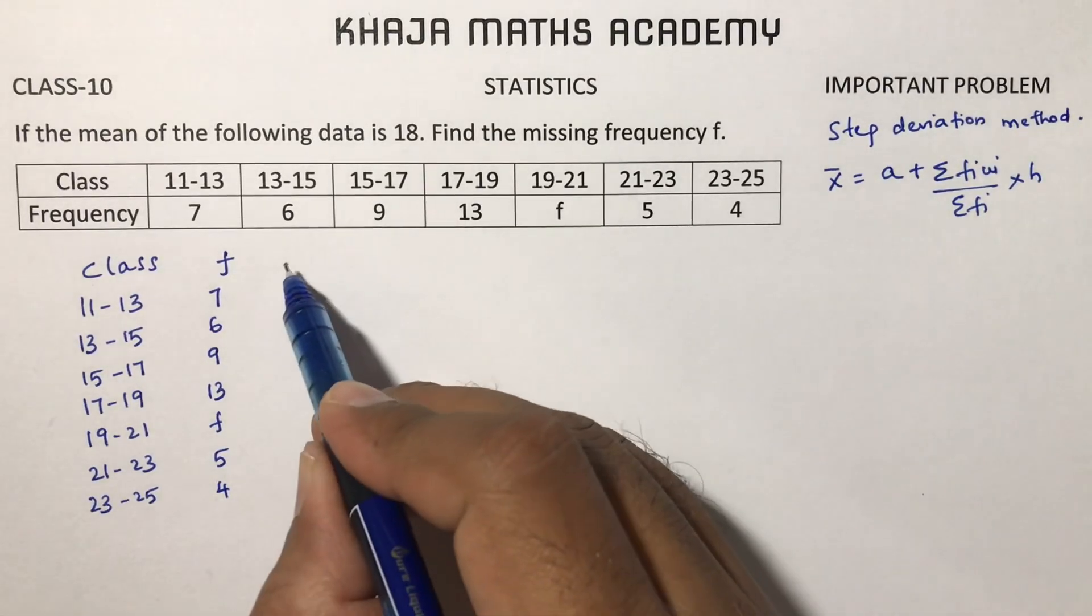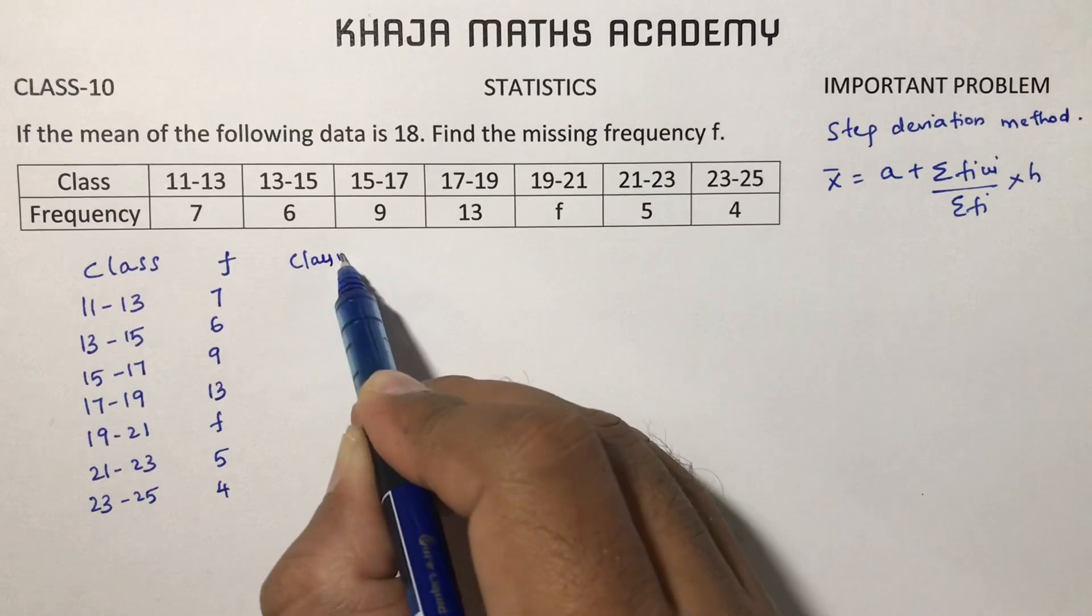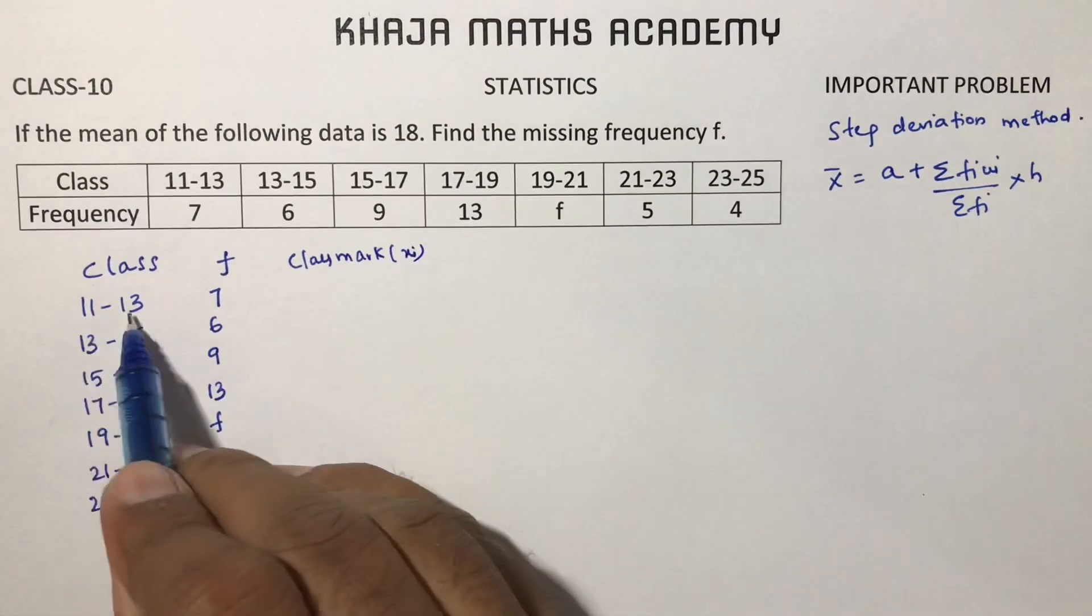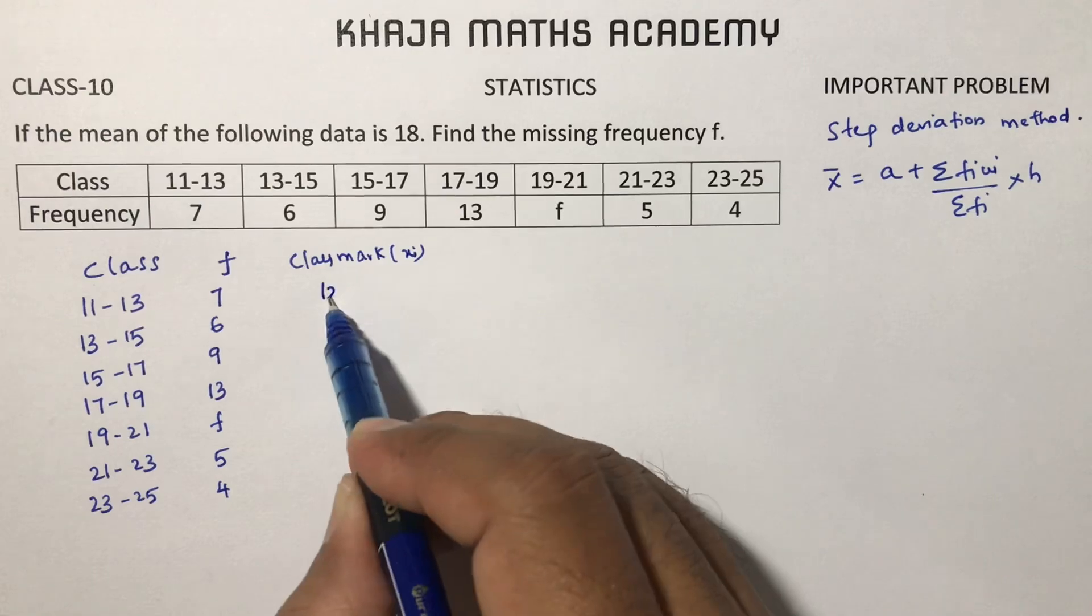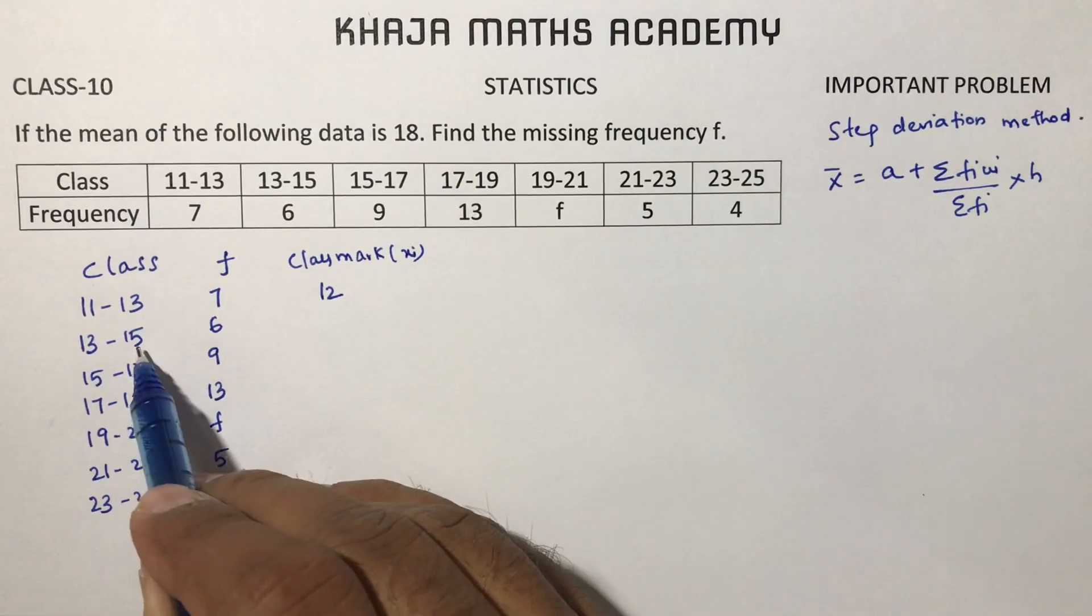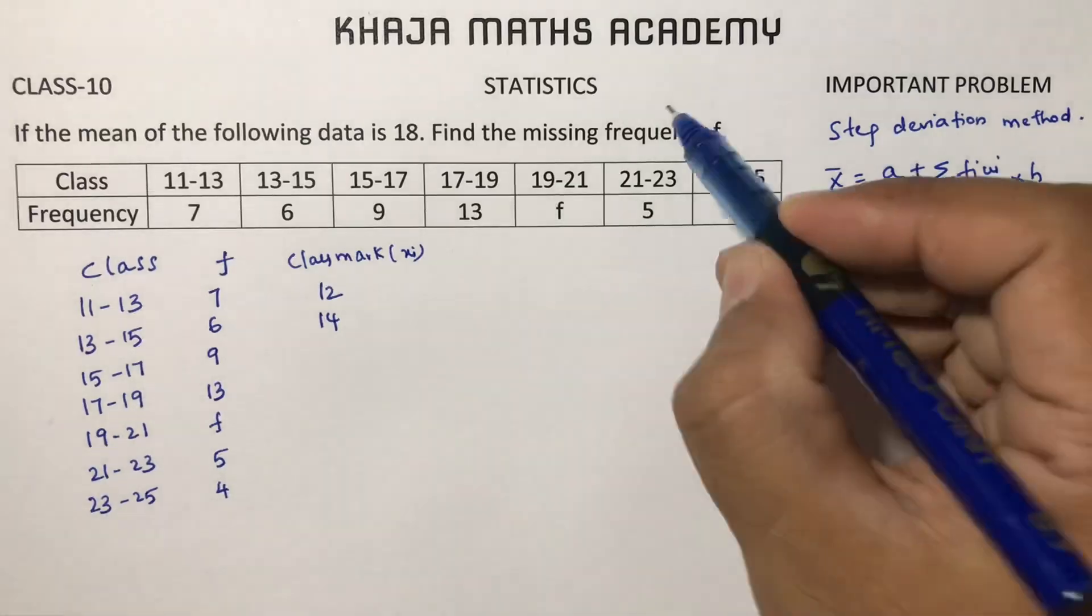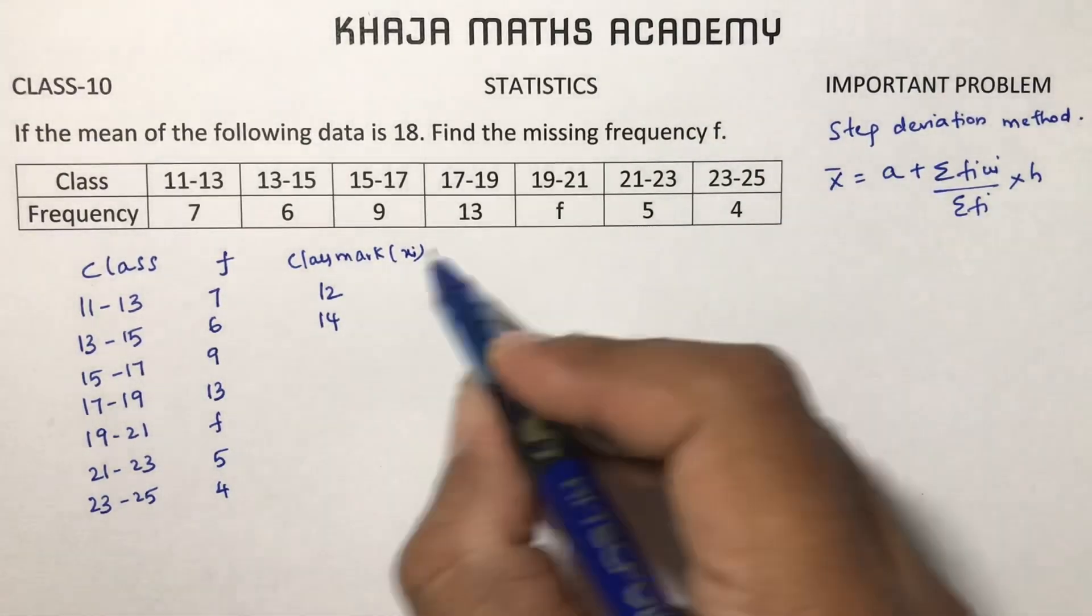First, for calculating mean we need to calculate class marks. Here class marks: 11 plus 13 is 24 by 2, 12. 13 plus 15 is 28, 28 by 2 is 14. Instead of that we can keep on adding the value of h. In this problem, the h value is 2.